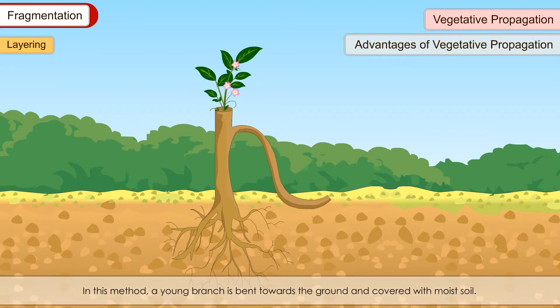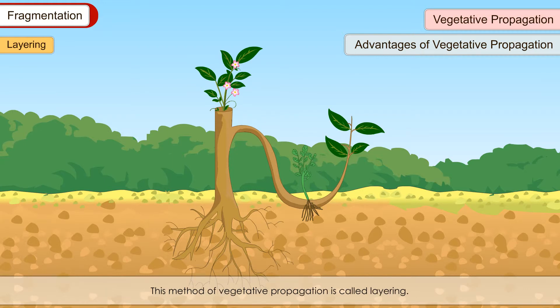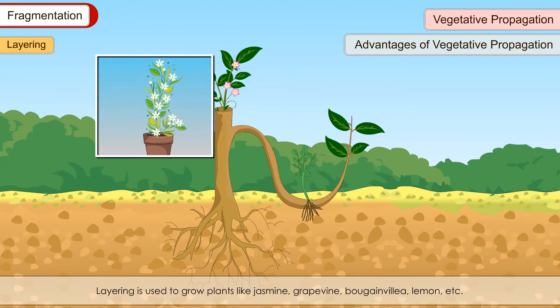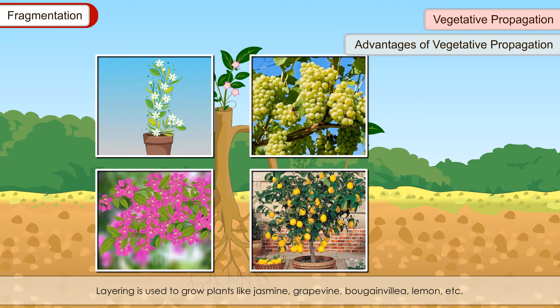Layering: In this method, a young branch is bent towards the ground and covered with moist soil. This covered part, in contact with the soil, produces new roots. The branch is then separated from the parent plant and allowed to grow into a new plant. This method of vegetative propagation is called layering, and it is used to grow plants like jasmine, grapevine, bougainvillea, lemon, etc.